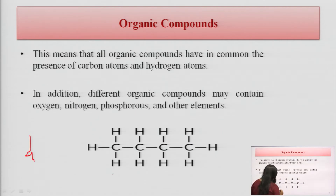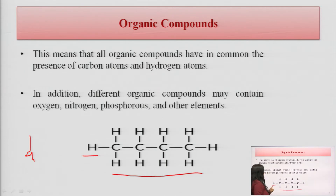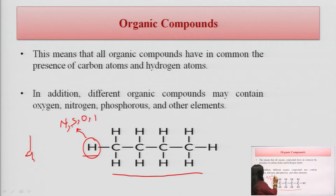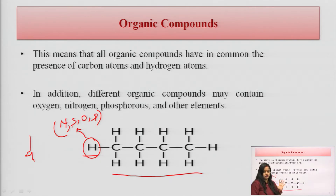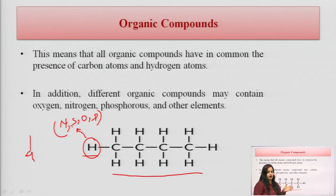In the carbon chain, the carbon atom is attached with the hydrogen atom. Sometimes this hydrogen atom is replaced by different heteroatoms like nitrogen, sulfur, oxygen, or phosphorus. Such compounds are called heterocyclic compounds. There are two types of organic compounds — heterocyclic and homocyclic. When carbon and hydrogen form a cyclic ring, the compound is called homocyclic. When hydrogen is replaced by a heteroatom, the compound is called a heterocyclic organic compound.